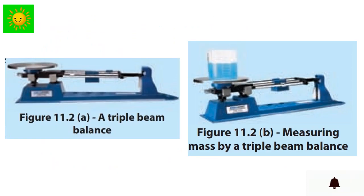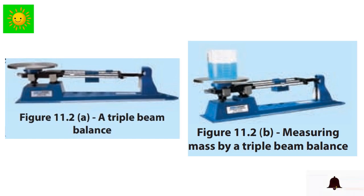Here is what we have to do: adjust the triple beam balance to the zero mark. Measure the mass of a clean and dry 500 milliliter empty beaker using this balance. Measure 100 milliliter of water into the beaker using the 100 milliliter measuring cylinder. Measure the mass of the beaker with the water. Then measure the mass of 250 milliliter and 500 milliliter of water separately using the same beaker. Divide the mass of water by its volume and find the ratio in each instance.